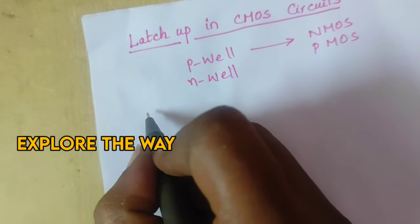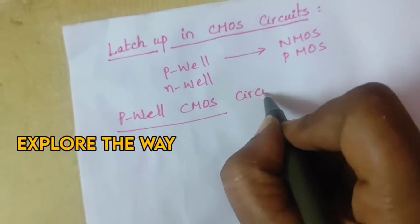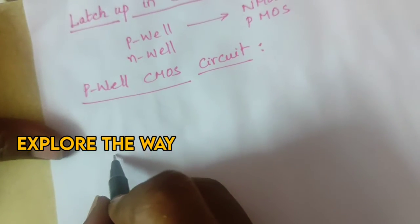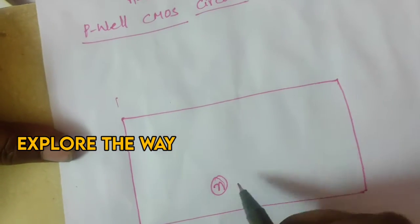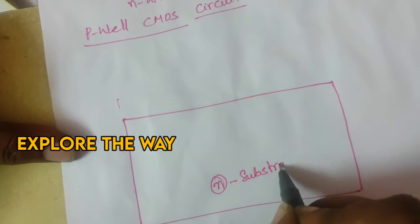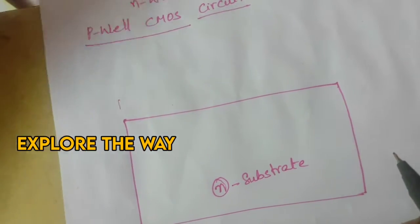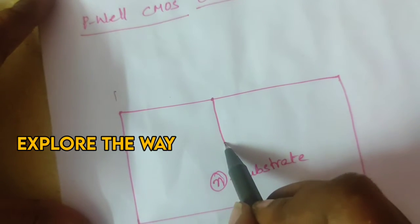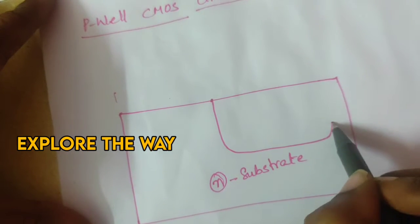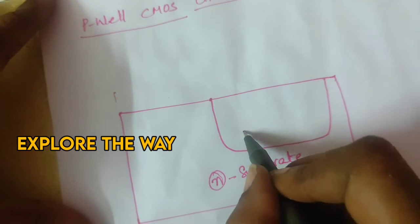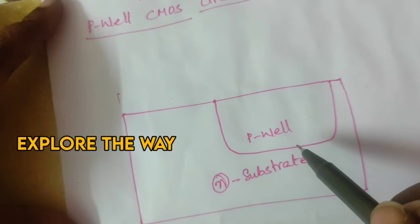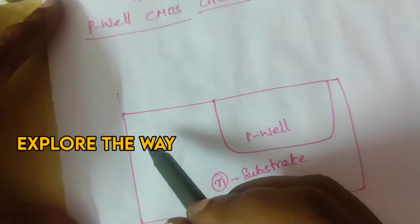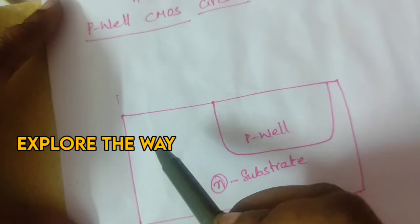Let us see the structure of a P-well CMOS circuit. The P-well CMOS circuit starts with an N-type substrate. Into this N-substrate, a deep P-diffusion is formed — we can call it the P-well. In the P-well, the N-MOS transistor is formed, and the P-MOS transistor is formed in the N-substrate.